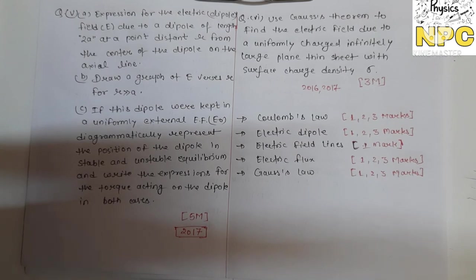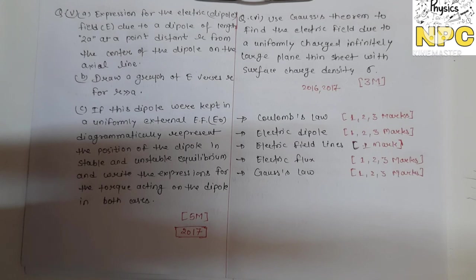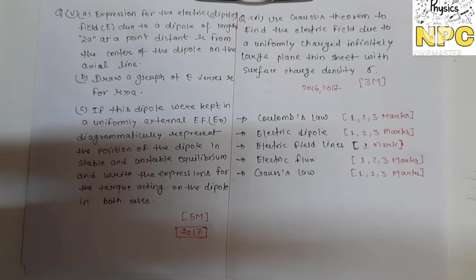In part C, you need to do the complete derivation for torque and show the conditions: when theta equals 0, 180, or 90 degrees. You need to prove when the electric dipole will be in stable equilibrium and when it will be in unstable equilibrium. So in question 5, find the electric field on the axial point, plot the graph, and find the complete torque expression. This 5-mark question appeared in 2017.